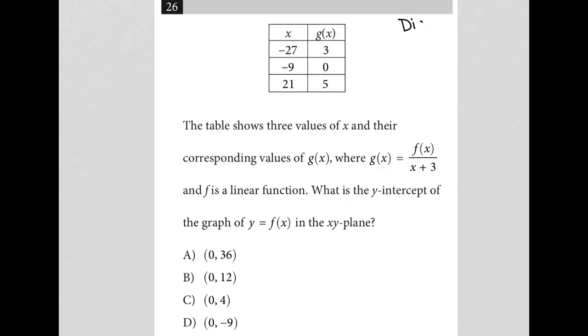This question is a diagram question, more specifically a table question. We have our table here with x values and corresponding g of x values. The question says the table shows three values of x and their corresponding values of g(x), where g(x) equals f(x) over x plus 3, and f is a linear function.